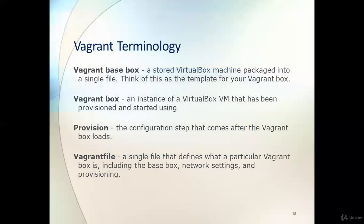Here are a few important Vagrant terms. A Vagrant base box is a virtual machine packed into a single file — it is called a base box, and basically it is a template. A Vagrant box is an instance of a VirtualBox VM. Any running virtual machine — whether on Oracle VirtualBox, KVM, or Hyper-V — is called a Vagrant box. Provision means configuration steps.